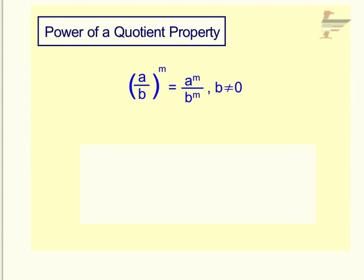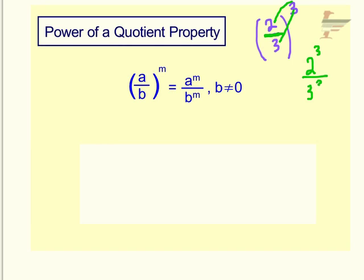Our last property is called the Power of a Quotient property. If you have a fraction inside parentheses with two separate bases — a base of a and a base of b — if you are dividing your two bases you can bring your exponent into every single base on the inside. So for example, if I had two-thirds raised to the third power, I can bring that exponent — because I'm dividing right here — into the 2 and into the 3. So I end up with 2 cubed over 3 cubed. 2 cubed is 8, 3 cubed is 27, so in the end we end up with 8 over 27.